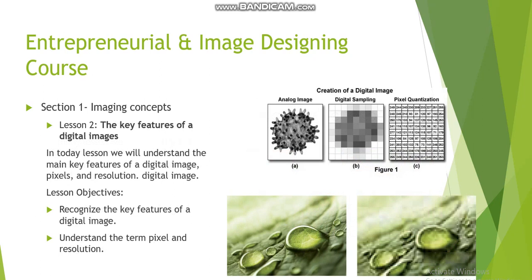In our second lesson we talk about the key features of digital images, where we will understand pixels and resolution. Pixels are the small tiny dots that represent the picture on a computer screen. The more pixels you use, the higher the resolution you will have. You can see examples in the video now — one picture with high resolution and one with low resolution, showing how a digital image is represented using pixels. We will also look at analog images, which are represented differently.